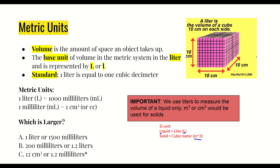For the 'which is larger' comparisons: first, one liter or 1,500 milliliters — since one liter equals 1,000 milliliters, the 1,500 milliliters is bigger, equivalent to 1.5 liters. Next, 200 milliliters or 1.2 liters — definitely the 1.2 liters, since one liter is already 1,000 milliliters. Finally, 12 cubic centimeters or 1.2 milliliters — since one milliliter equals one cubic centimeter, these are equivalent units, so we just compare the numbers: 12 cubic centimeters is larger because 12 is the bigger number.